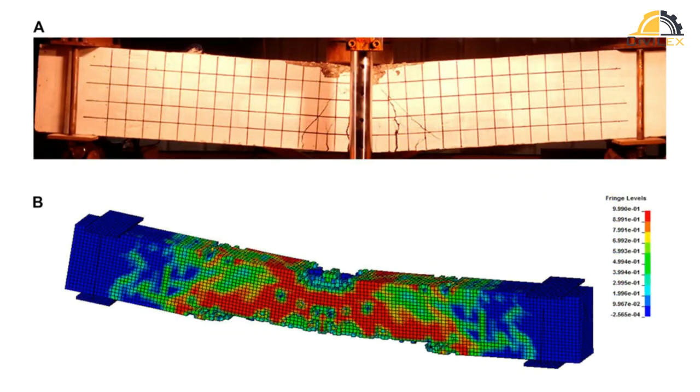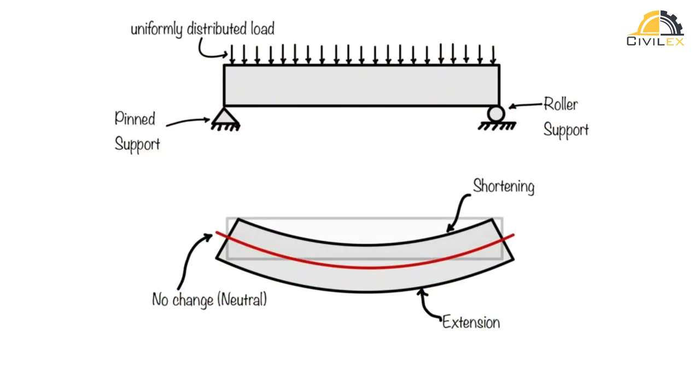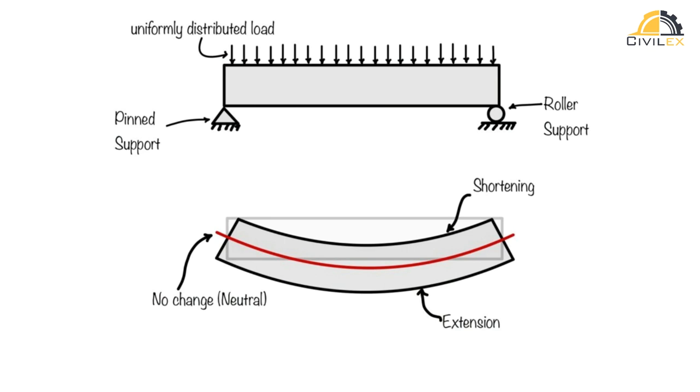Bending stresses: The primary bending stress in deep beams is tensile stress at the bottom fiber and compressive stress at the top fiber. This distribution occurs because the depth of the beam allows for a larger moment of inertia, which significantly affects the bending behavior.